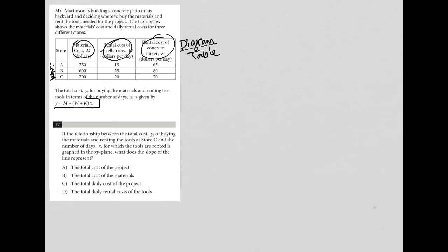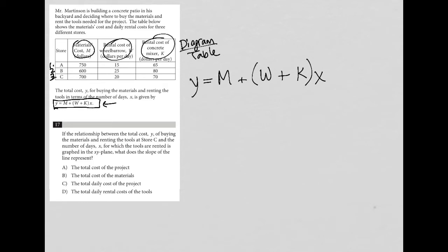We're also provided with an equation that tells us the total cost based upon the store chosen. Question 17 asks: if the relationship between the total cost Y — which is Y equals capital M plus parentheses W plus K times the number of days X — and the number of days X for which the tools are rented is graphed in the XY plane, what does the slope of the line represent?